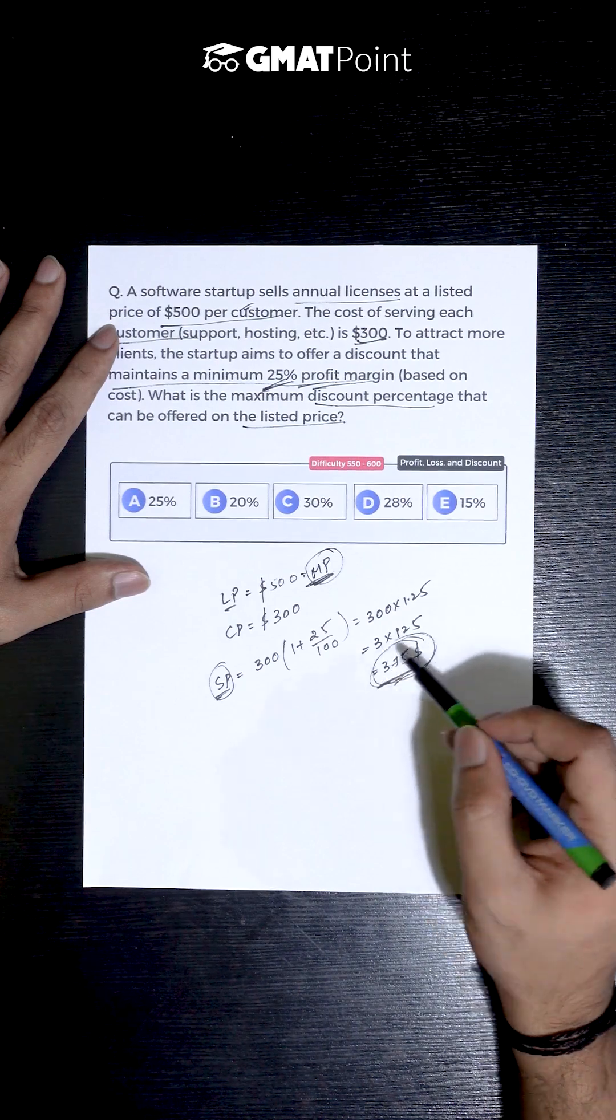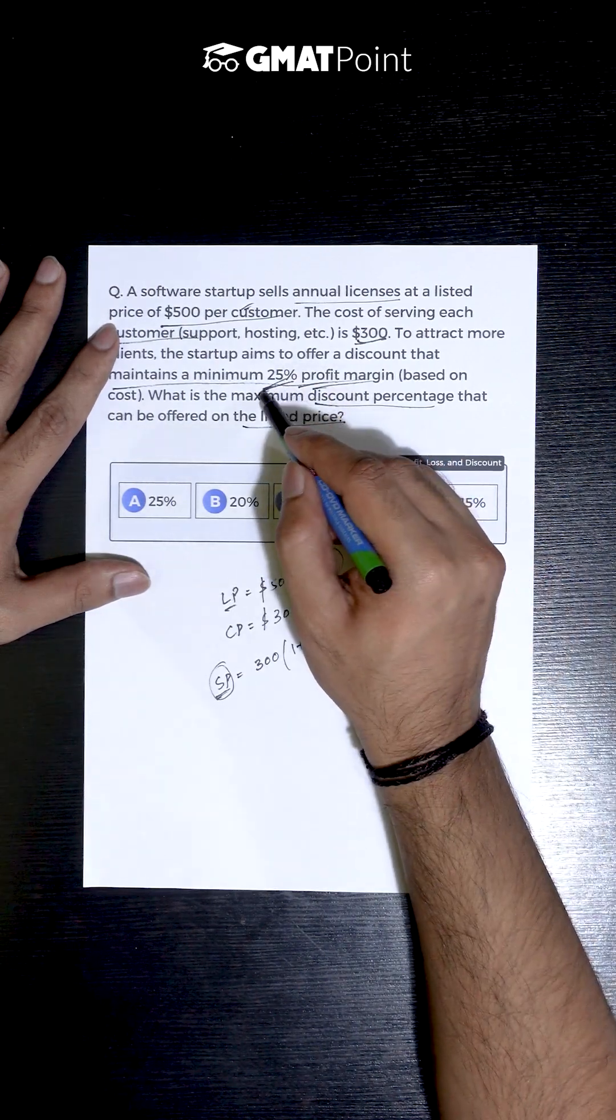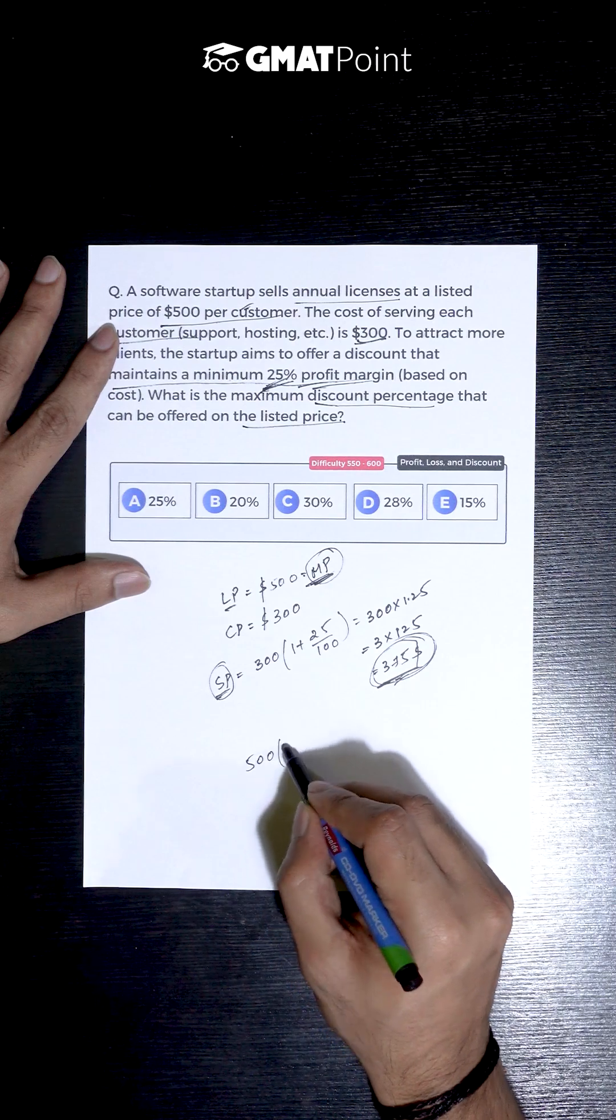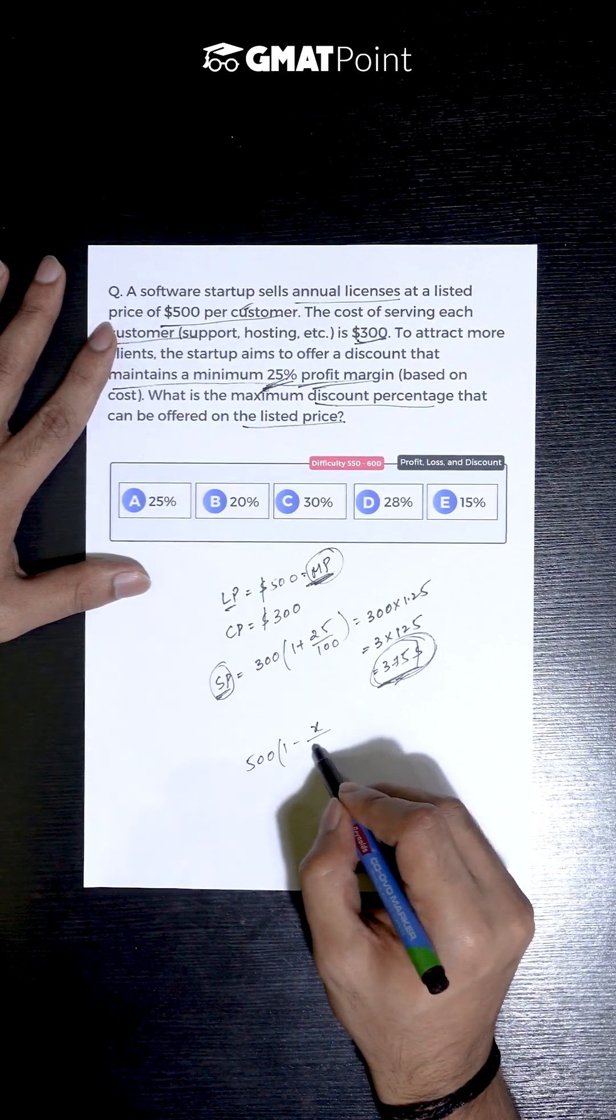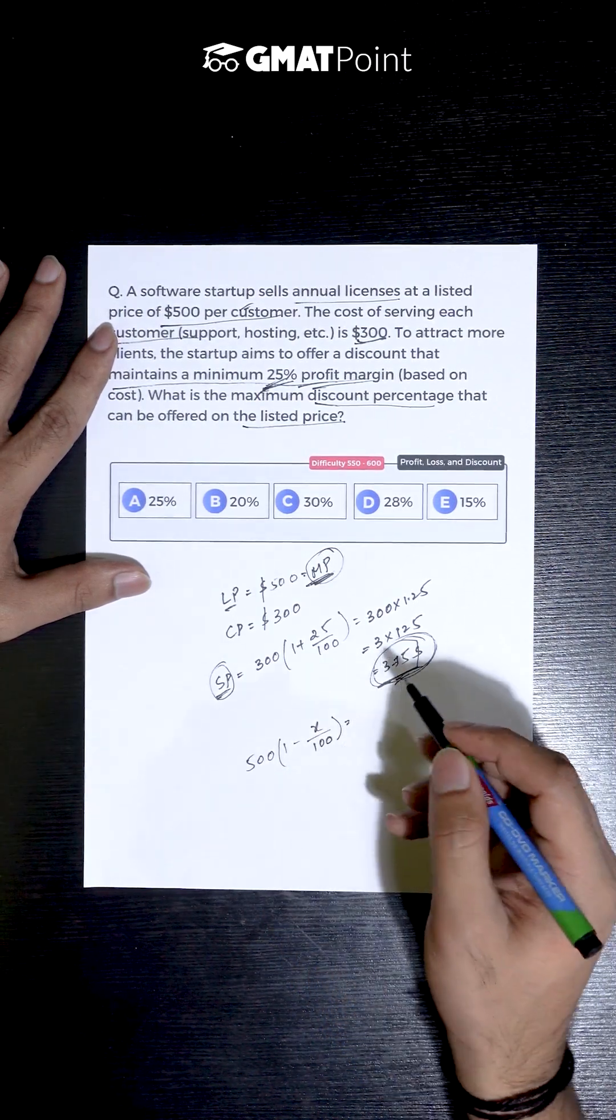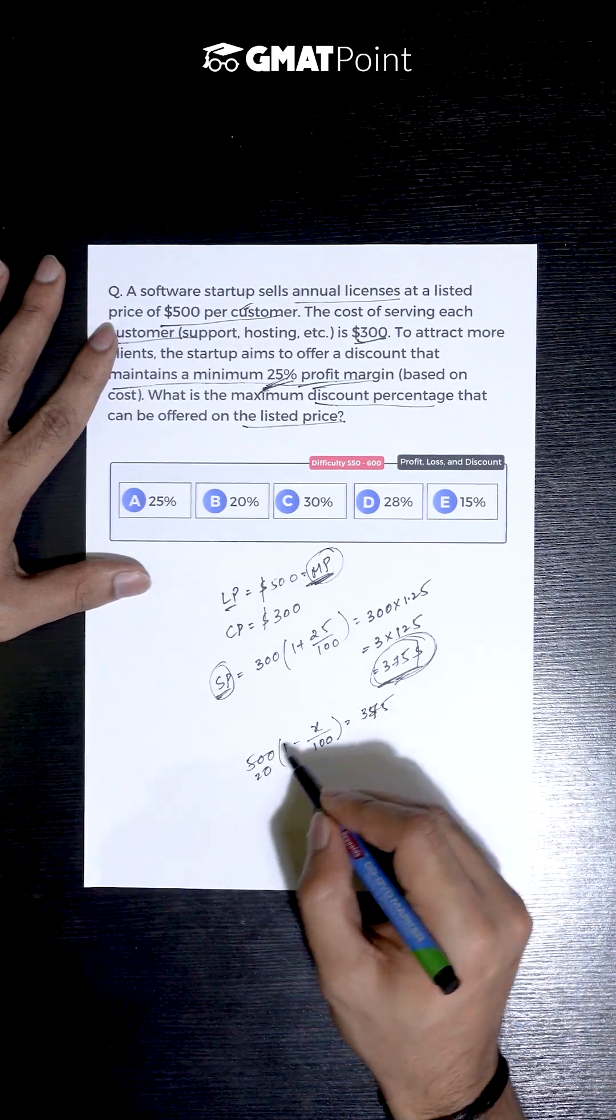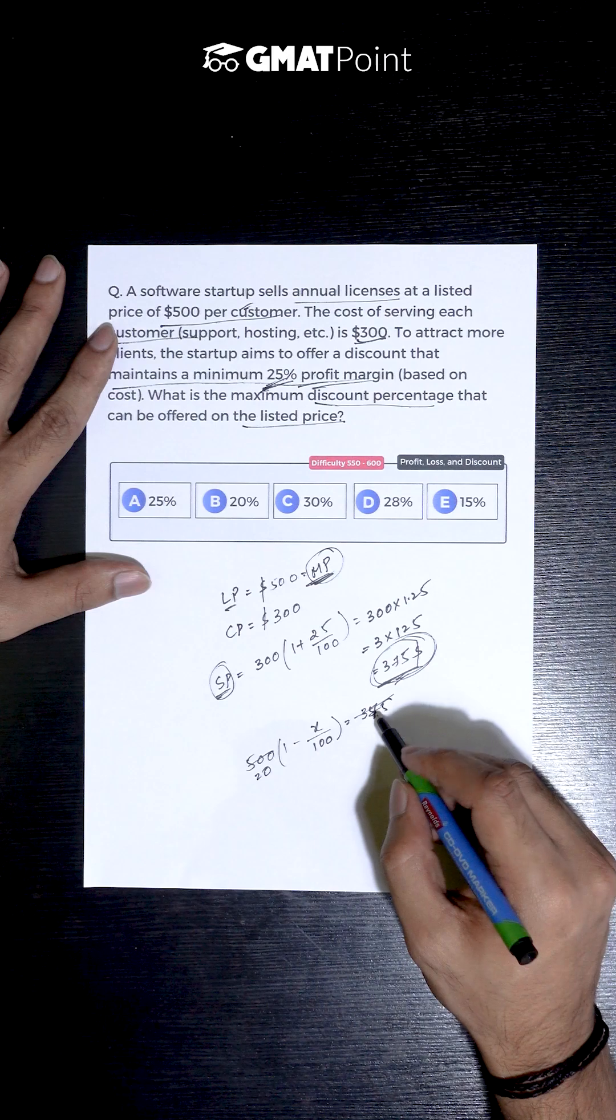We know that the selling price is $375 when the profit is 25%. So the maximum discount, if we assume the value to be X%, at that discount the selling price becomes $375.